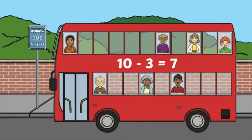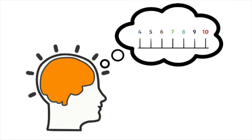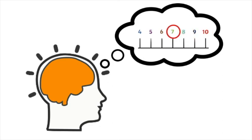Ten take away three equals seven. Imagine a number line starting at ten in your head and count back three: one, two, three. Seven. Ten take away three equals seven.